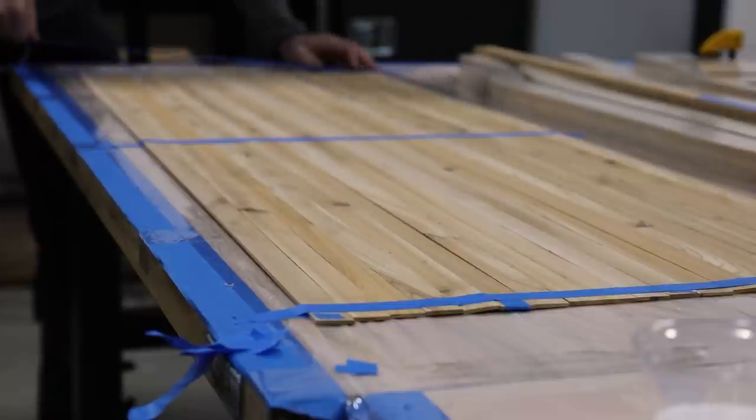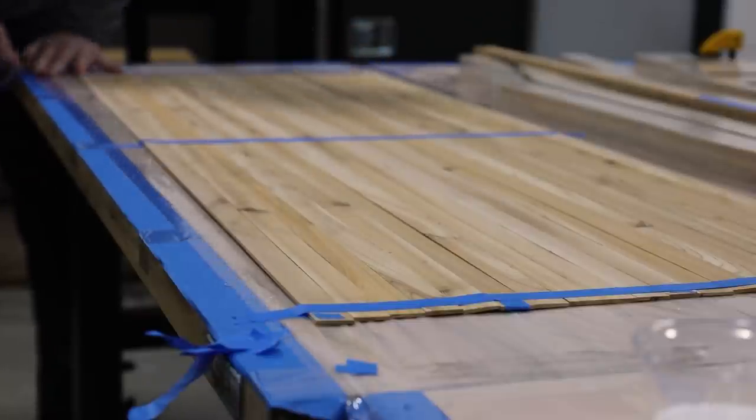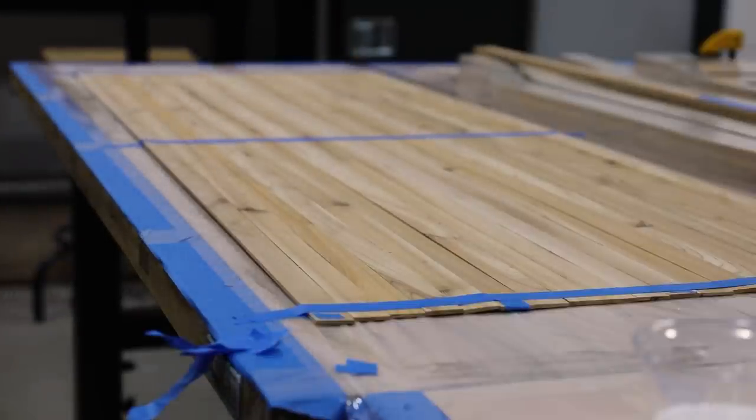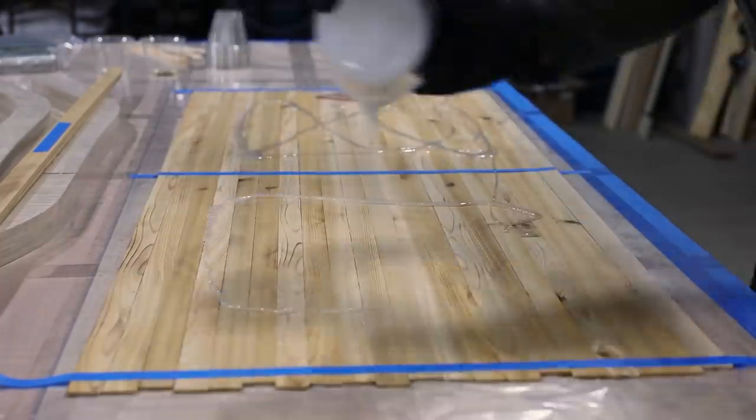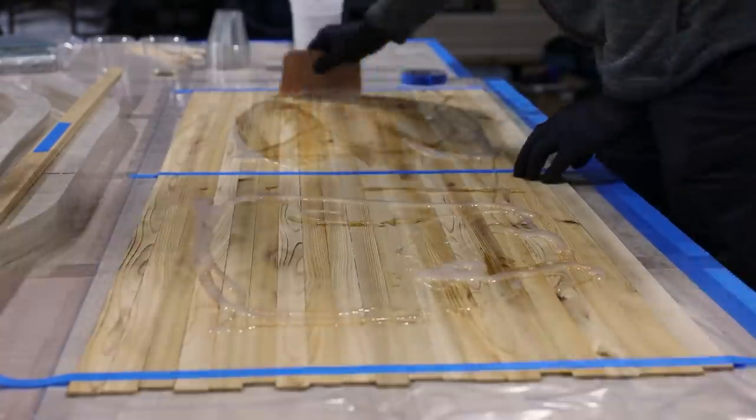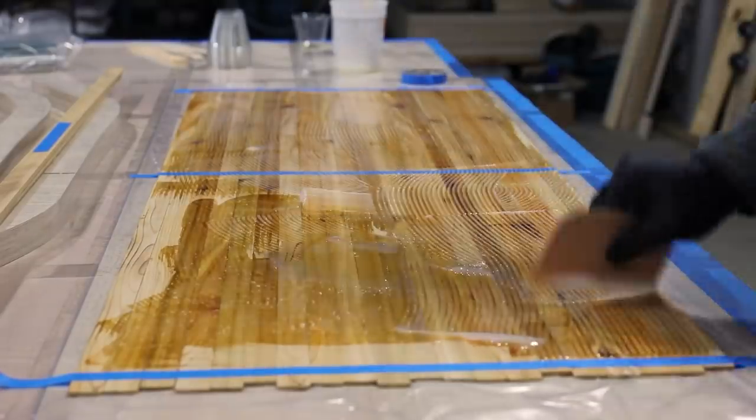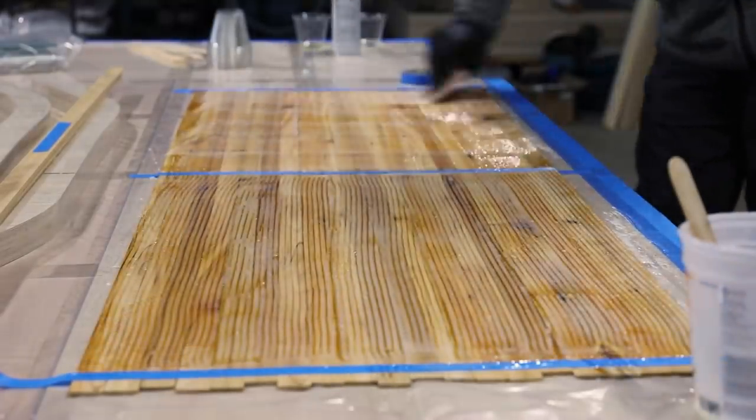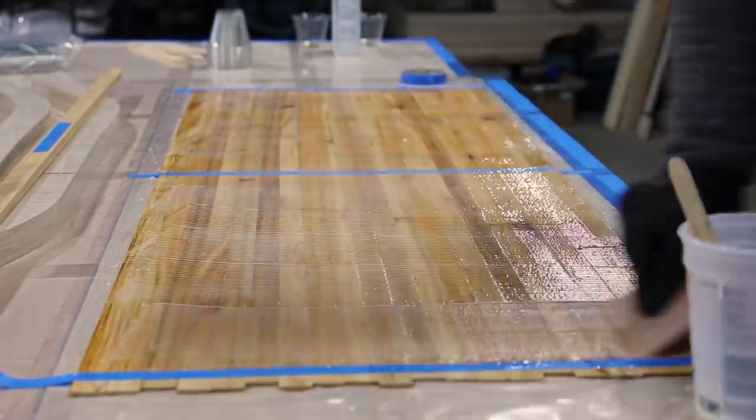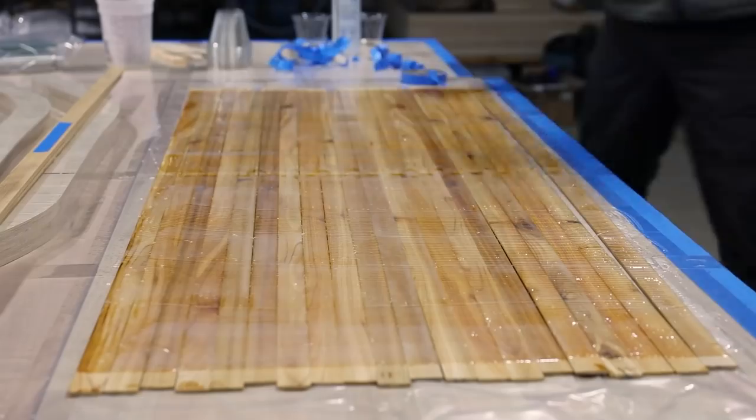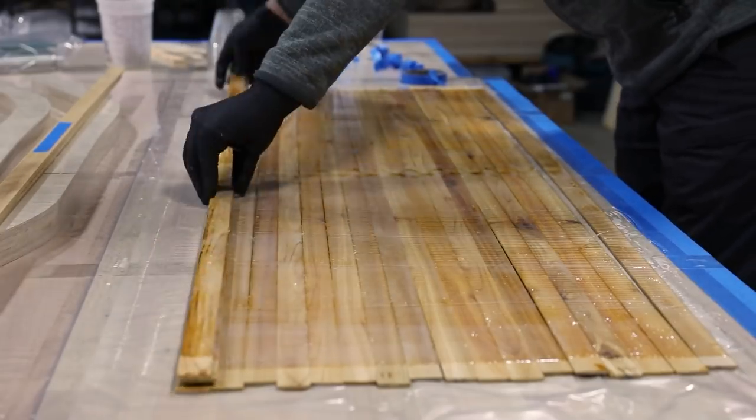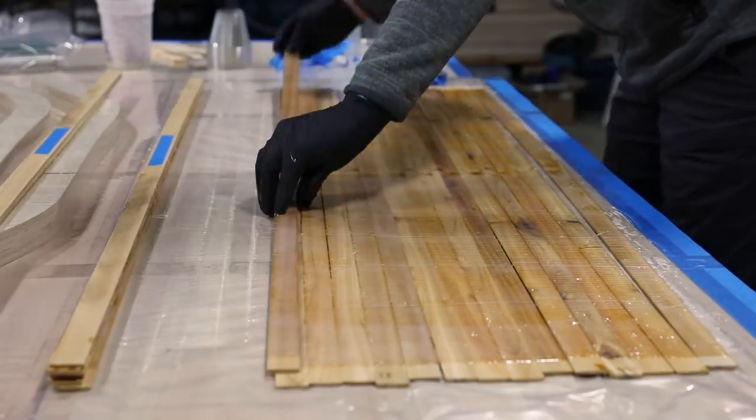I am laying out all of the strips flat in order to more effectively apply the thickened epoxy. This epoxy is thickened with microfibers to improve the glue up, and to fill any gaps between the laminations. Check out the description for more information on what I used.